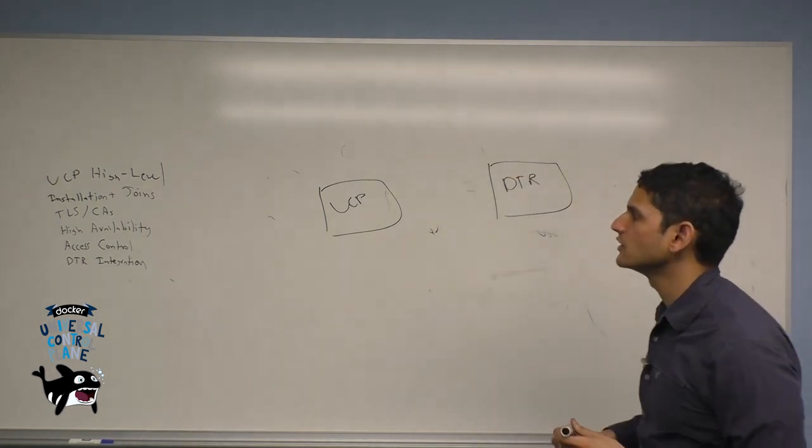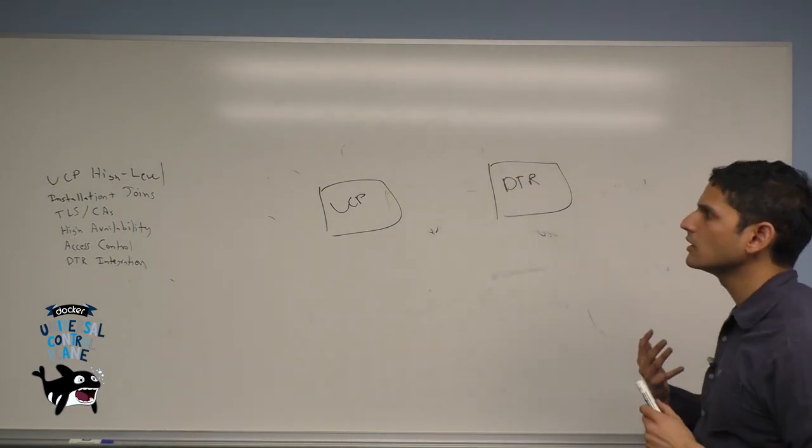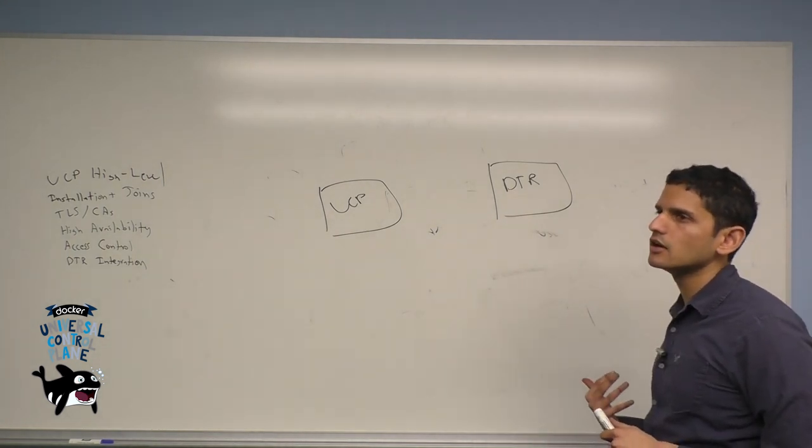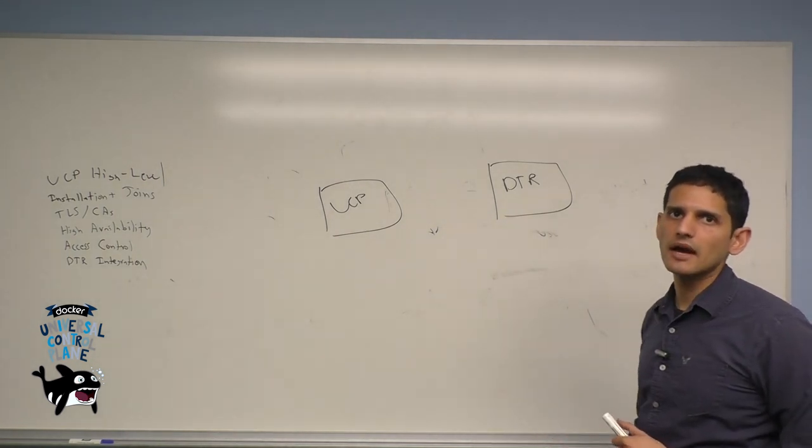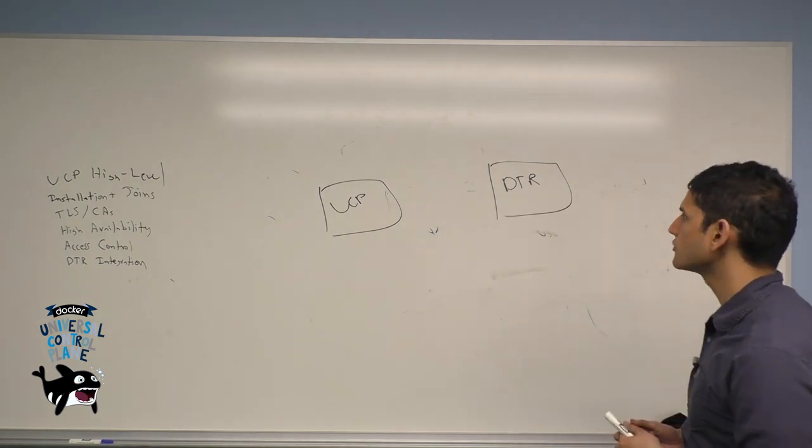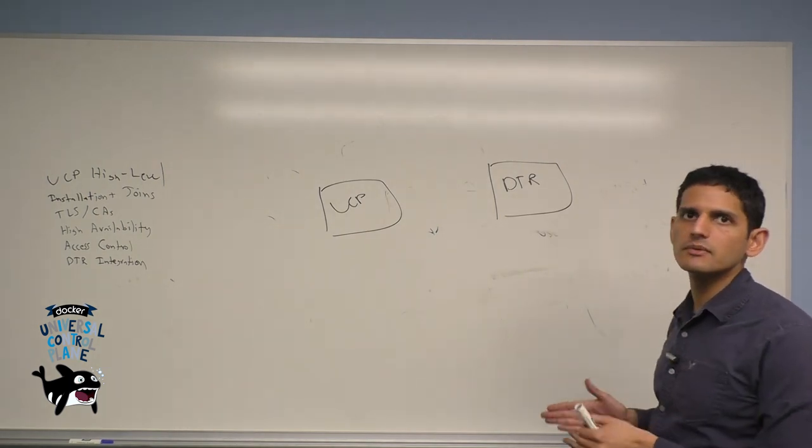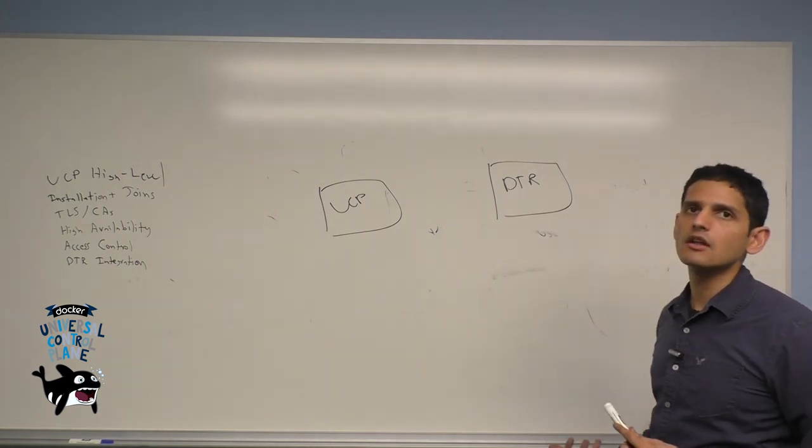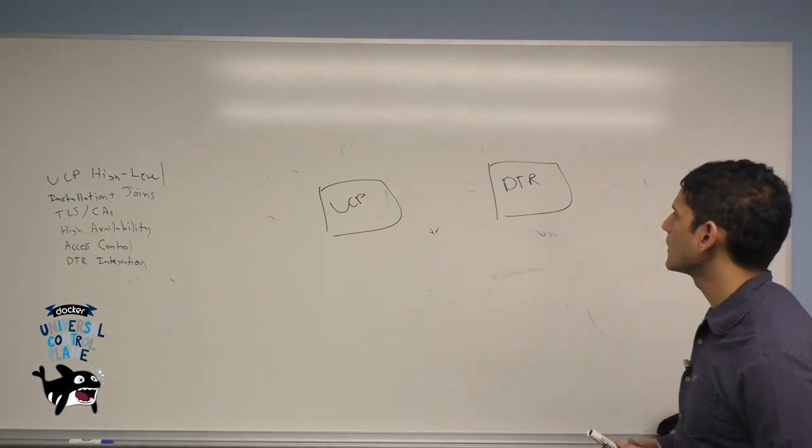The purpose of the integration is to allow you to push and pull images to and from UCP from DTR using a shared authentication backend. This means that you have users who are authenticated to both your UCP and DTR services and you don't have to expose a Docker login in plain text.